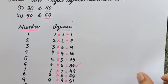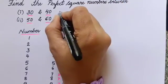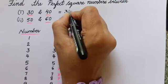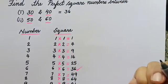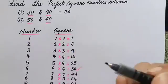So the perfect square number between 30 and 40 is only 36. There is only one number that exists between 30 and 40, so 36 is the only perfect square.